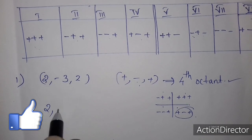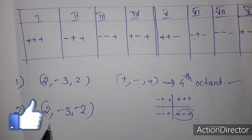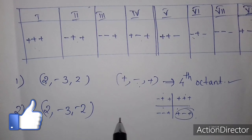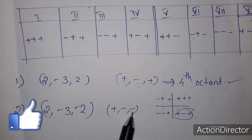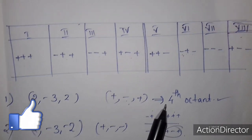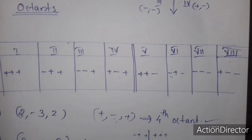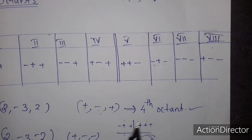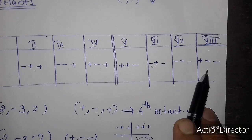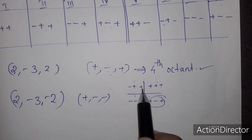Next question: (2, -3, -2). The sign pattern here is plus, minus, minus. The last sign is negative. Checking the pattern plus, minus, minus — that corresponds to the 5th, 6th, 7th, or 8th octant range. This is the eighth octant.